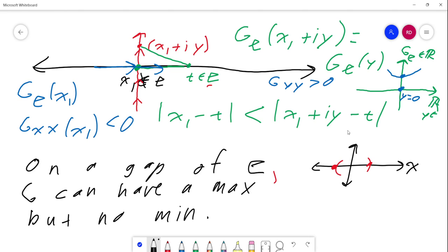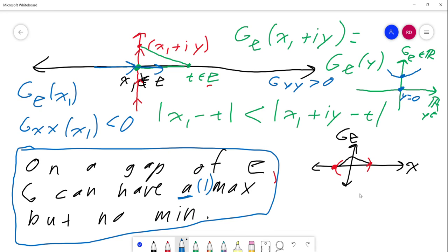But another thing we know about the Green's function is it's harmonic when we're not in E, and X₁ is not in E. So therefore, Gₑ of X, if instead of looking at Y we go along X, well because of harmonicity, GXX at X₁ has got to be negative. So that result is going to be very useful and very important to us in the not-too-distant future because it implies that on a gap of E, G can have a max but no min.